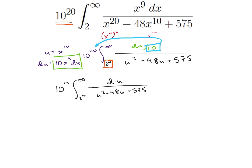Now the question is: what can we do with this? Is there any way we can make this a little nicer? It would be great if we could factor the bottom. We notice we often like to look for squares, so let's complete the square. With 48 here, if we want to make this u minus 24 squared, then 24 squared is 576 — we notice we almost have that. We have it if we subtract 1 on the outside.